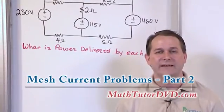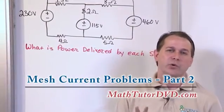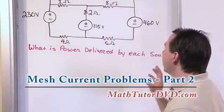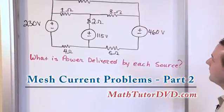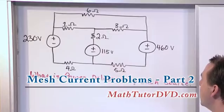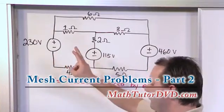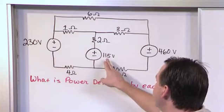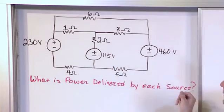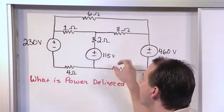Hello and welcome to the section of the circuit analysis tutor. Here we're going to use the mesh current method to solve this circuit on the board, which is a little more complicated than most because we have actually three sources in the problem. We've got 230 volts, 115 volts, 460 volts, and of course resistor network all around.